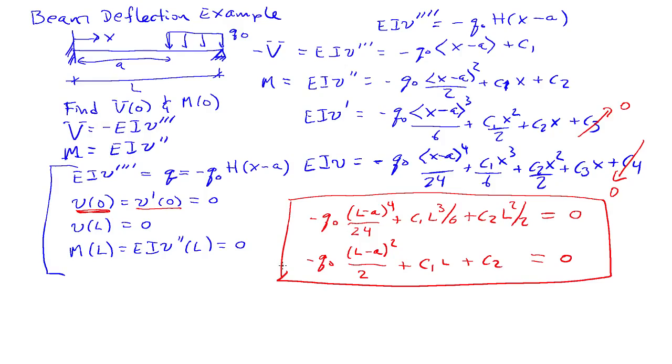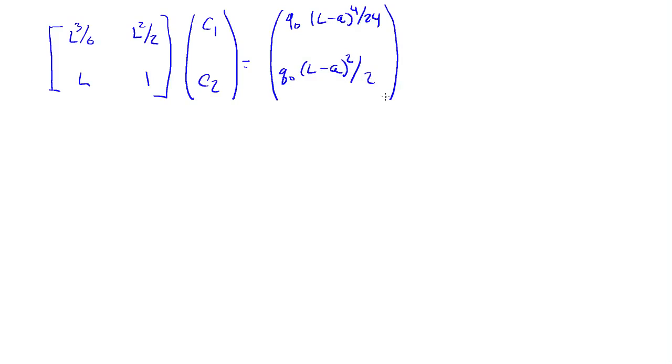So we can go ahead and do that. So I'll arrange them in a matrix form here. So L cubed over 6, L squared over 2, L and 1, C1 C2 is equal to Q naught, L minus A to the 4 over 24, Q naught, L minus A squared over 2. So we have to solve this system of equations. You can use Cramer's rule to do that.